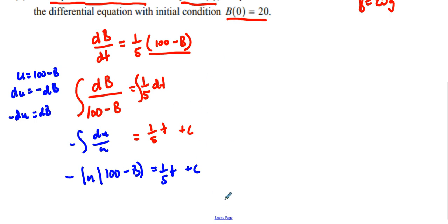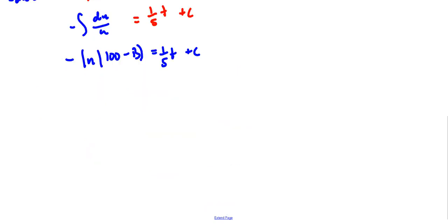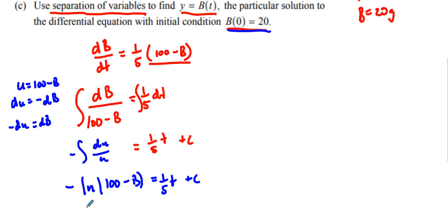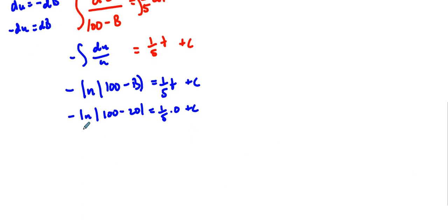From here, what I usually have my students do is now we're going to take this and we're going to just solve for c. So we're going to take our point under this condition and solve for c. So I'm going to plug in that point 0, 20 in here. And so we have negative natural log of 100 minus 20, and it's going to go 1/5 times 0. And so what we have here is that's going to equal negative natural log of 80. And that equals c. From here, we're going to take this, so now we have this negative natural log of 100 minus b equals 1/5 t minus natural log of 80.